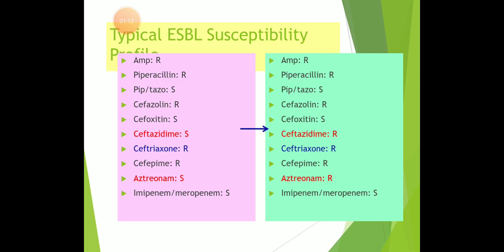When you receive a microbiological ESBL susceptibility test from the department of microbiology, you will see the picture of a drug test. R stands for resistance and S stands for sensitive. Just beside each and every drug, the term R or S is mentioned. On the basis of that and considering the nature of the organism, you have to select the proper, appropriate antibiotic.